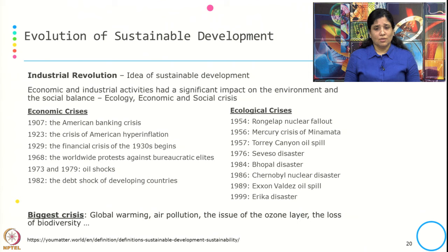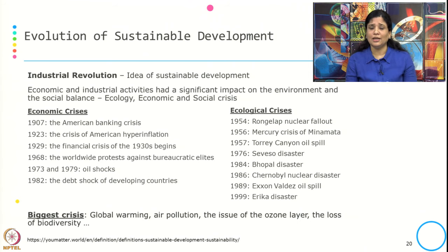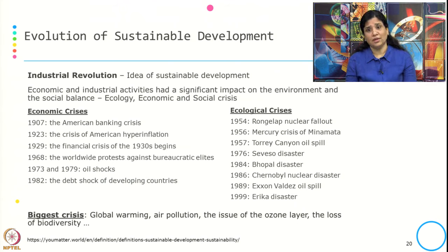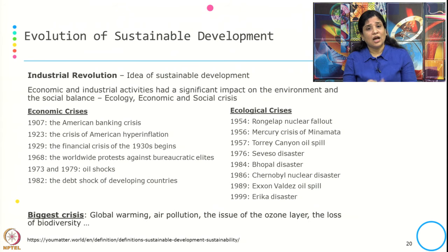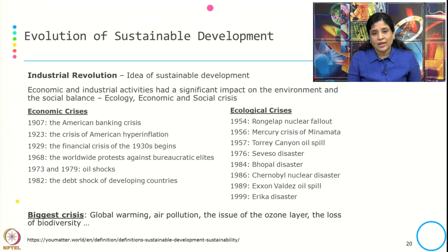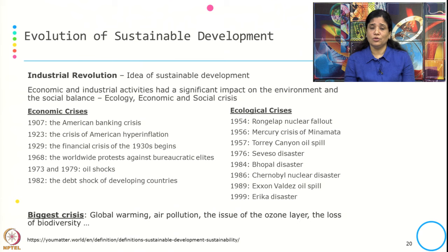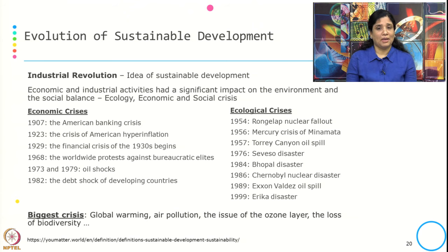This evolution of sustainable development has been taken from a beautiful blog written on eumatter, which gives the definition of sustainable development and sustainability, and nicely presents how sustainable development has evolved over a period of time. The idea of sustainable development started during the industrial revolution, which led to many crises because economic and industrial activities had a significant impact on the environment and social balance.